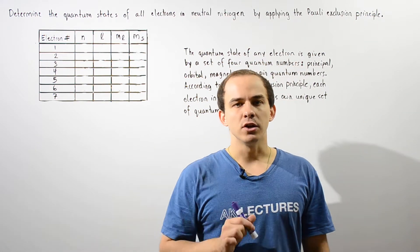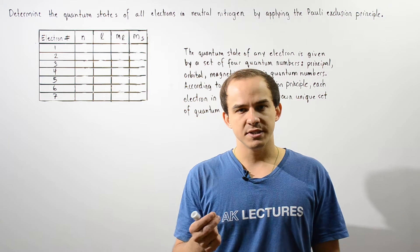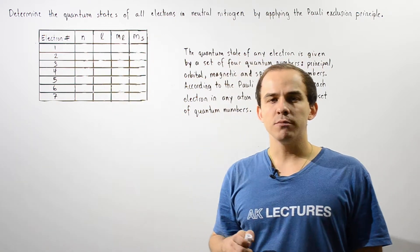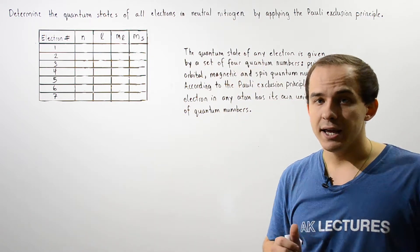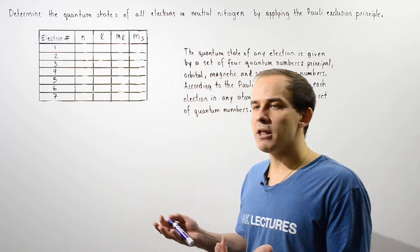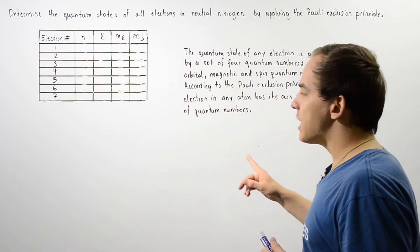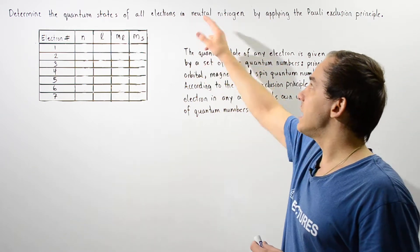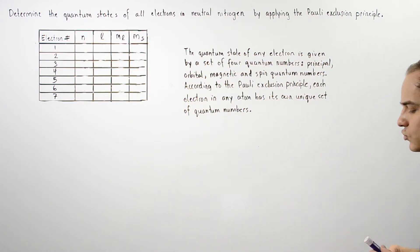In this lecture, we're going to look at an example that deals with quantum states and the Pauli exclusion principle. We want to determine the quantum states of all the electrons within the neutral nitrogen atom. The first step is to ask how many electrons we have. Because we're dealing with the neutral nitrogen atom, the number of electrons equals the number of protons. Nitrogen has seven protons, so we have seven electrons.